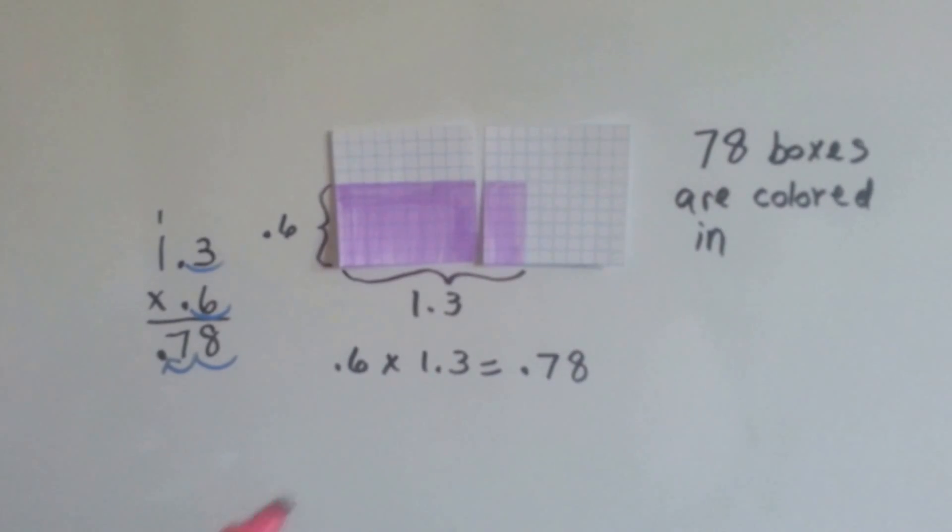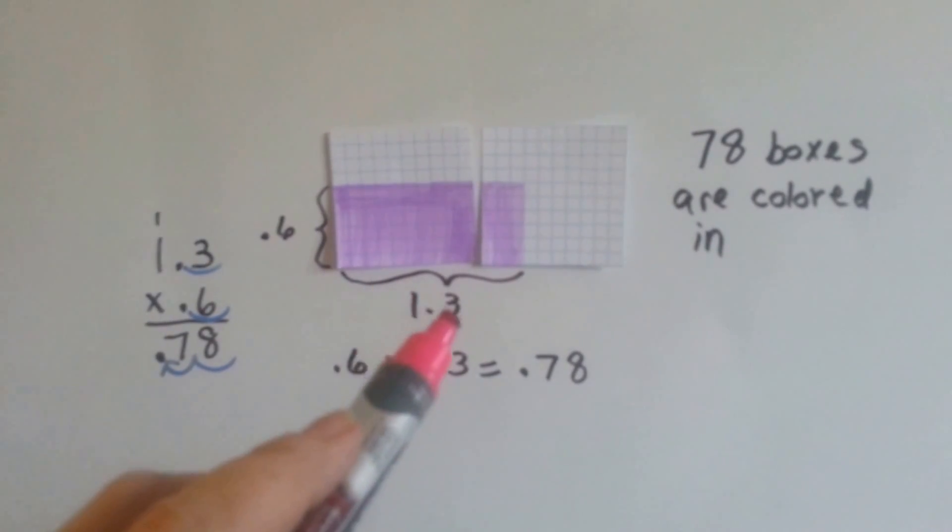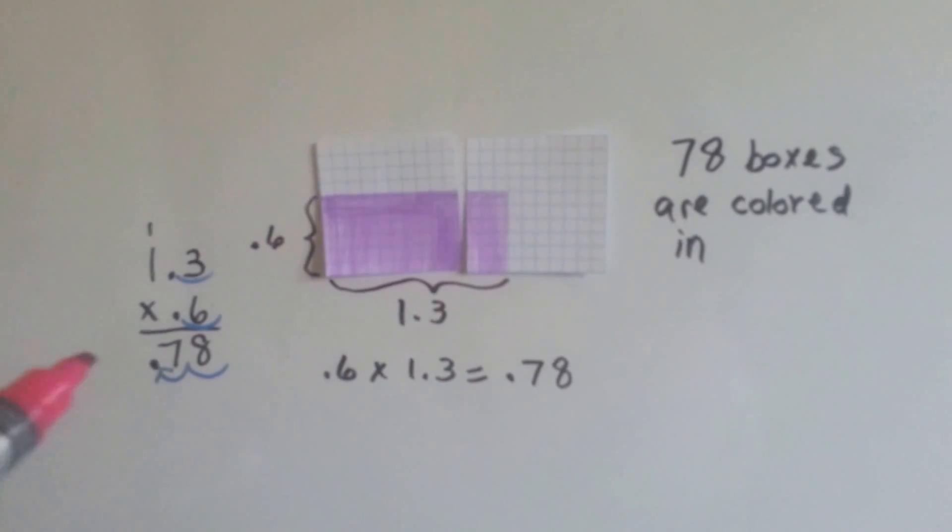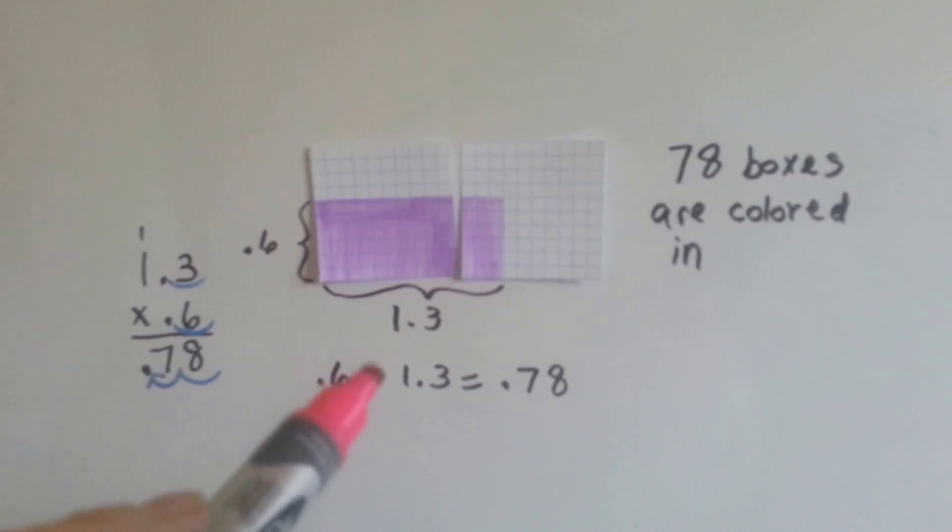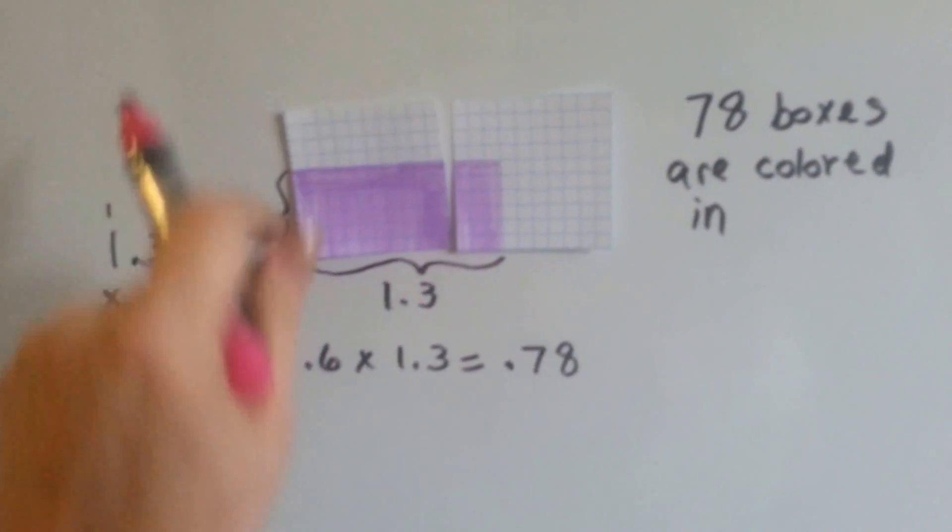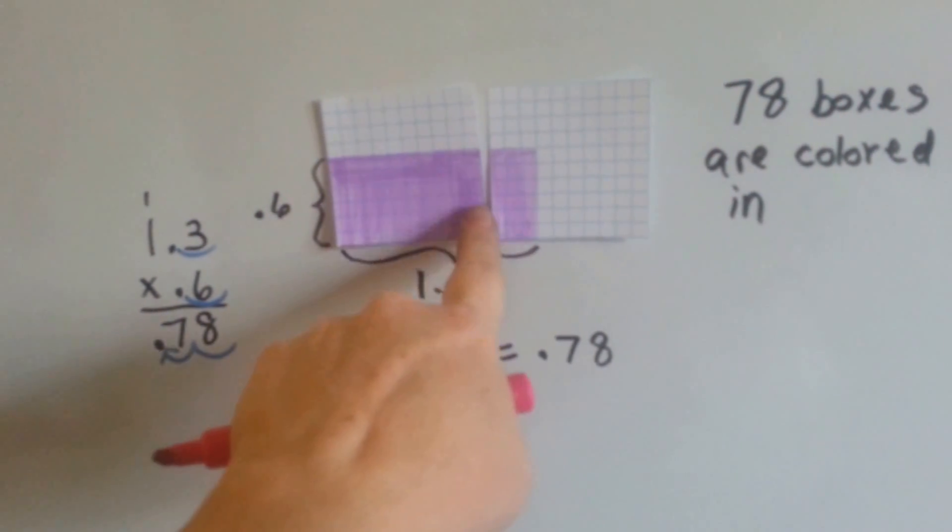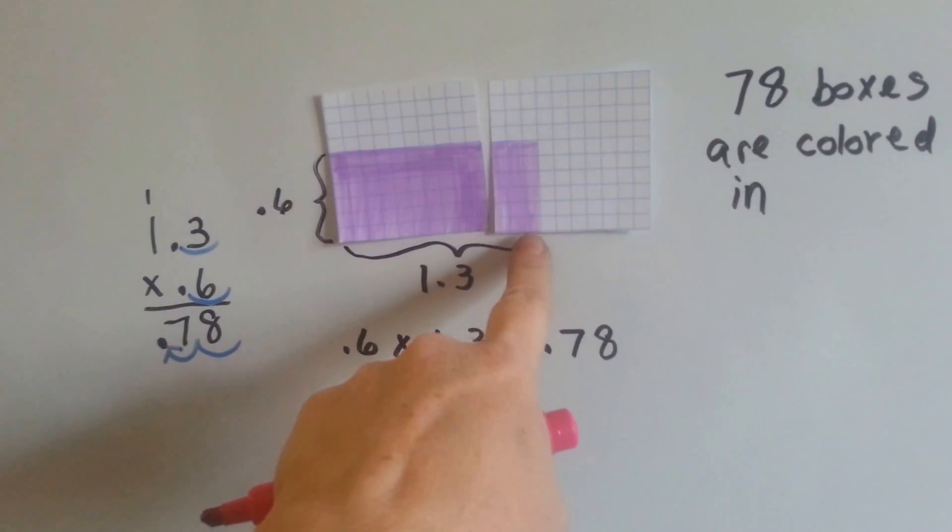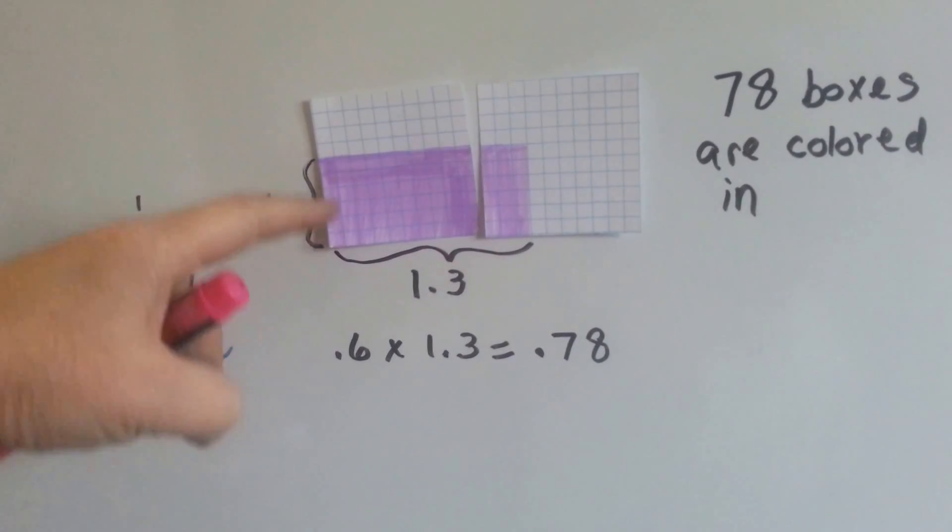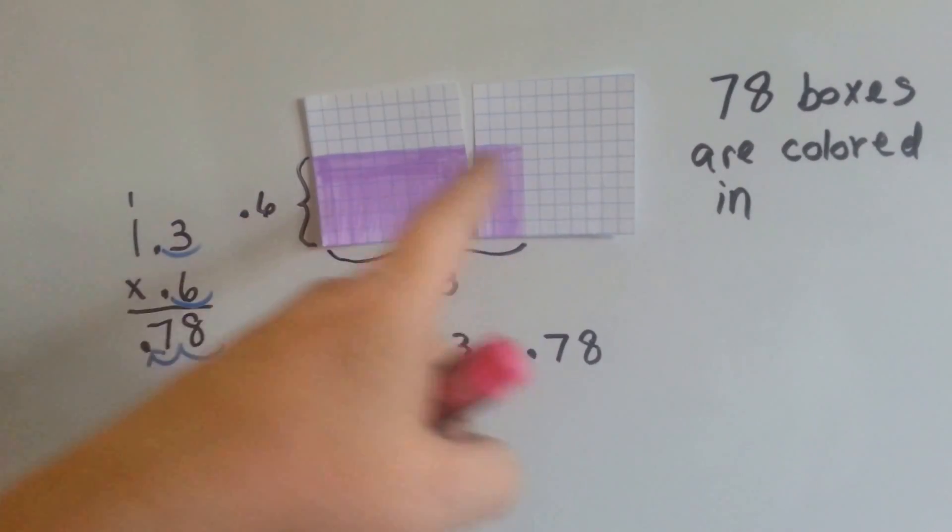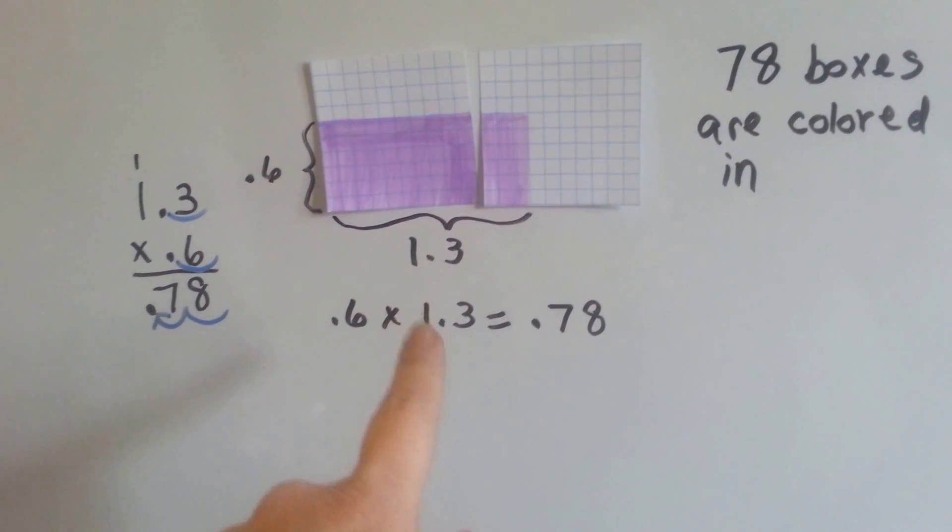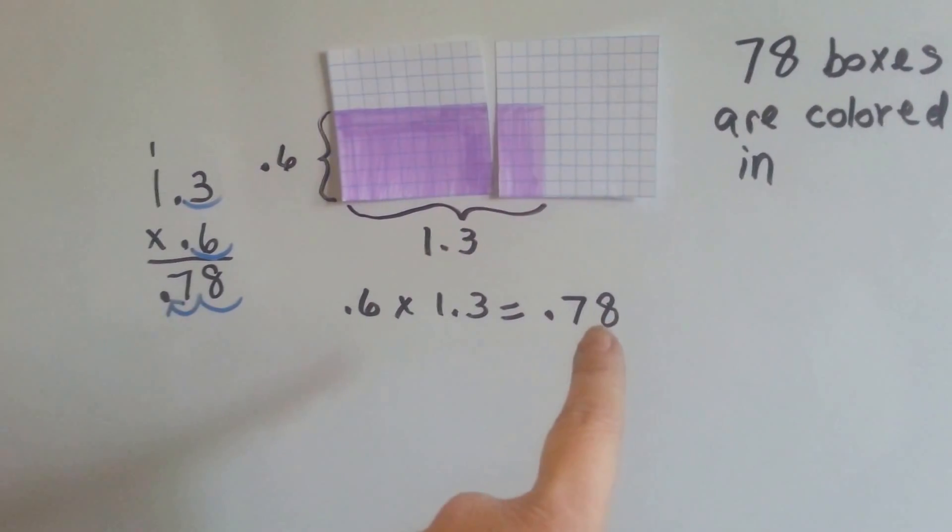Alright, now what do we do when we're multiplying by a whole number with a decimal like this, like 1 and 3 tenths? Well, 6 tenths times 1 and 3 tenths, what we do is we say, okay, well, there's a whole one there, isn't there? So we're going to have a whole one filled in here. Then we're going to fill in 3 tenths of this one, and we're going to do it 6 tenths high. When we count them all up, there's 78 boxes that are colored purple. 6 tenths times 1 and 3 tenths is 78 hundredths.